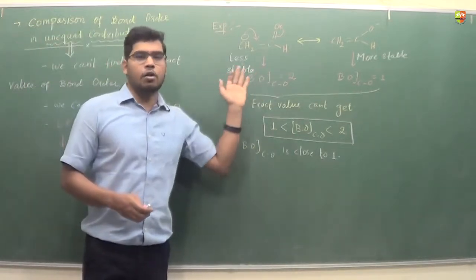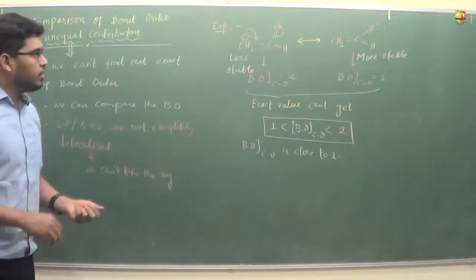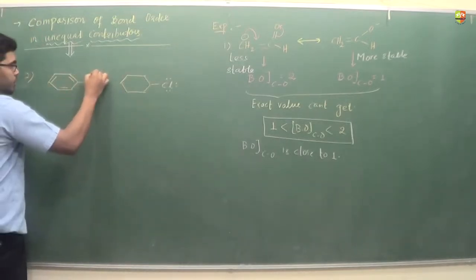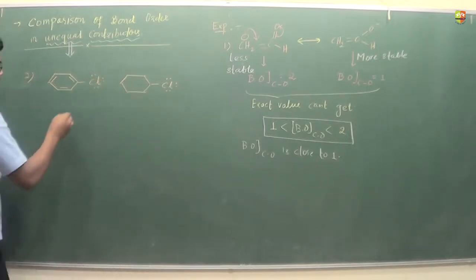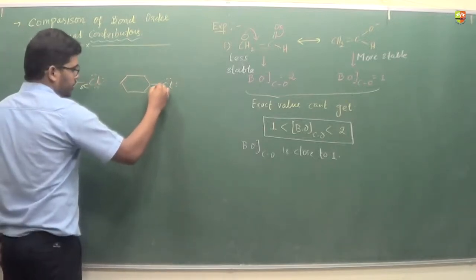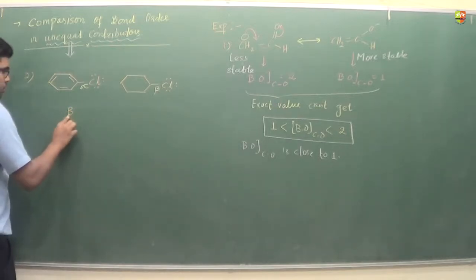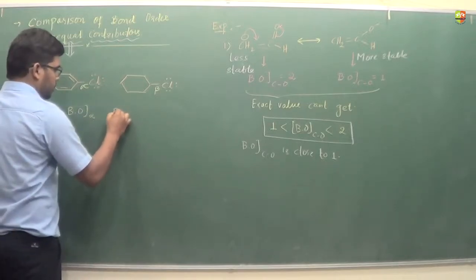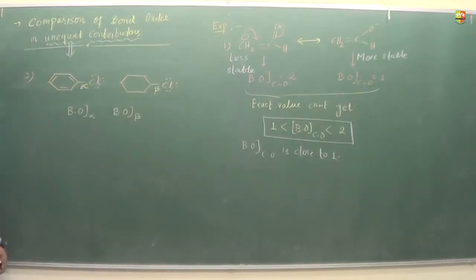Always remember: for equal contributors we can find the exact bond order; for unequal contributors we can only compare the bond order. The structure which is more stable determines whether the bond order is closer to one or two. Now let's take one more example, comparing the bond order of alpha and beta carbon-chlorine bonds.